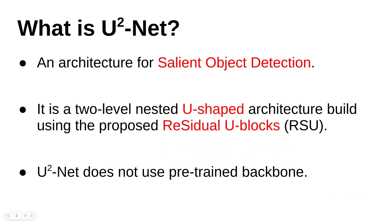Our first question is: what is U²-Net? It is an architecture which is specifically designed for salient object detection. Second, it is a two-level nested U-shape architecture built using the proposed residual U-blocks. And notably, U²-Net does not use any pre-trained backbone, which makes it really light when compared with existing methods.